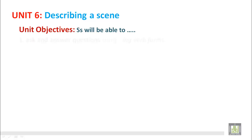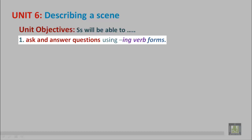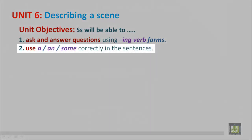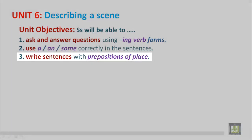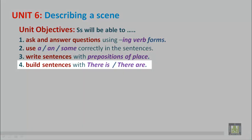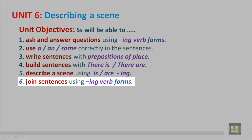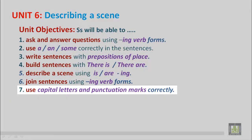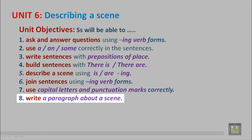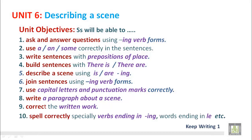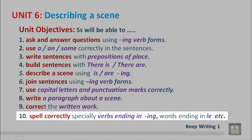Students will be able to ask and answer questions using ING verb forms. Use a, an, some correctly in sentences. Write sentences with prepositions of place. Build sentences with there is, there are. Describe a scene using is or are with ING verbs. Join sentences using ING verb forms. Use capital letters and punctuation marks correctly. Write a paragraph about a scene. Correct the written work. Spell correctly, especially verbs ending in ING and words ending in le.